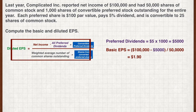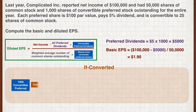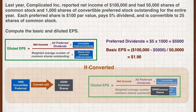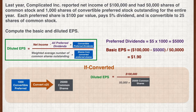To calculate the diluted EPS, let's change the scenario to the if-converted scenario. The 1,000 shares of convertible preferred stock are converted at the beginning of the year. Each preferred share is converted to 25 shares of common stock, giving us an additional 25,000 common shares for the year — this is added to the denominator. At the numerator, since all the preferred shares have been converted, the entire net income of $100,000 is available to the common stockholders. Plugging in the figures, we get a diluted EPS of $1.33.